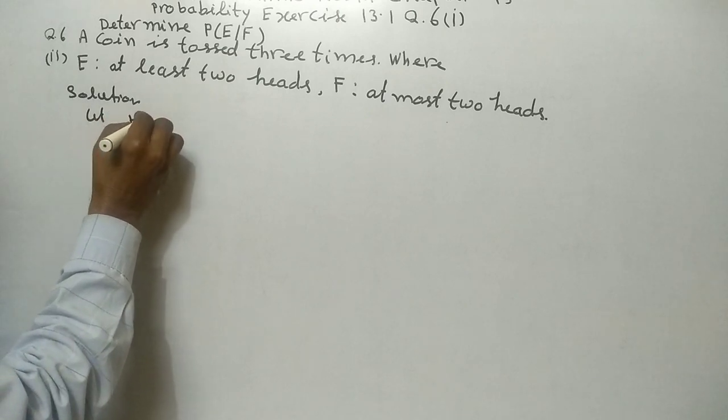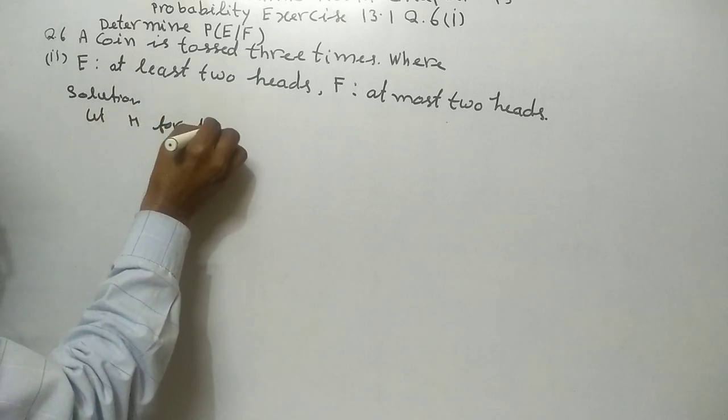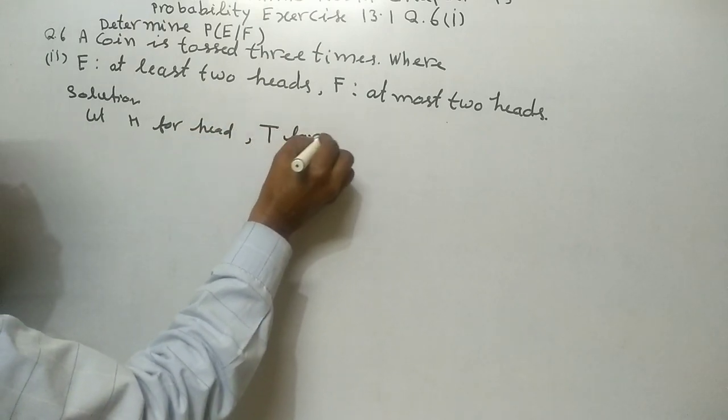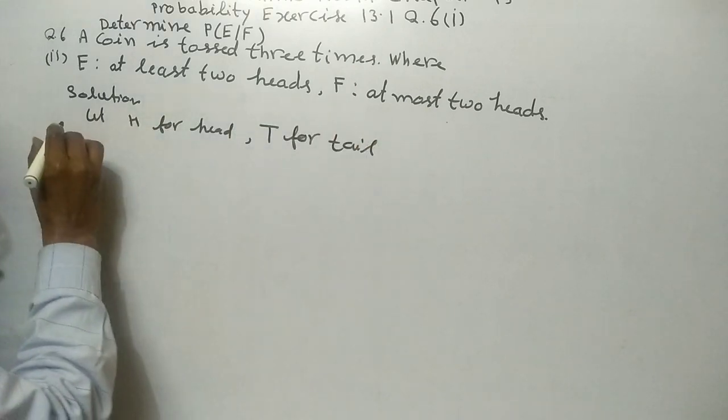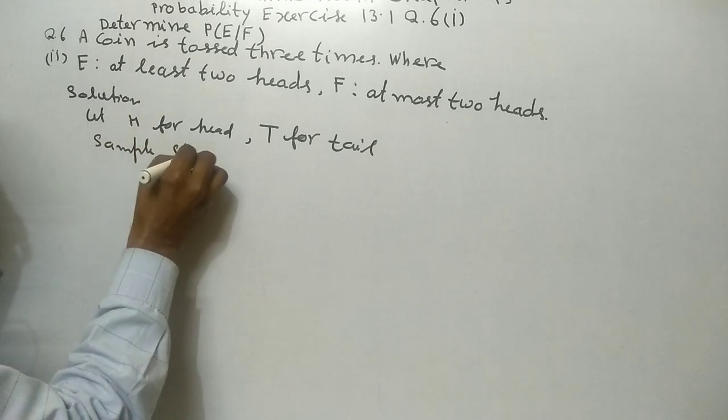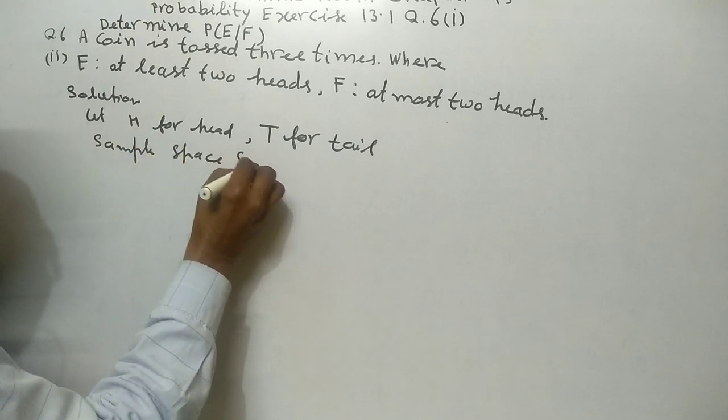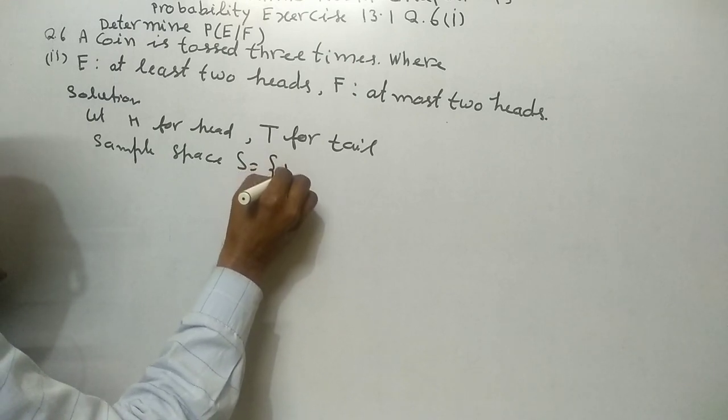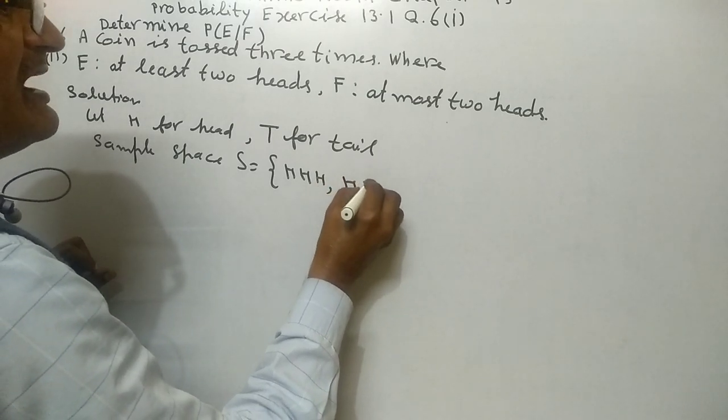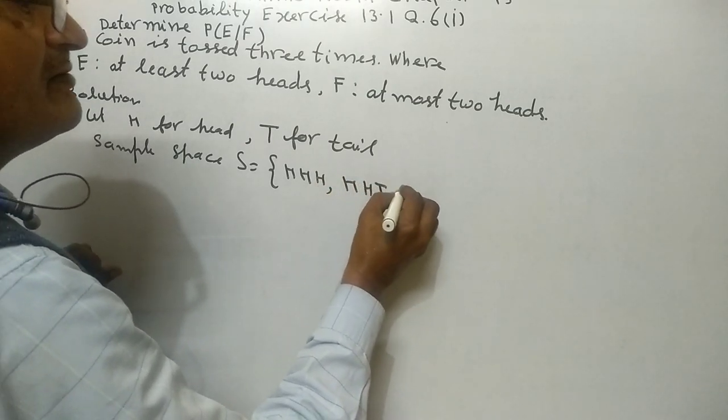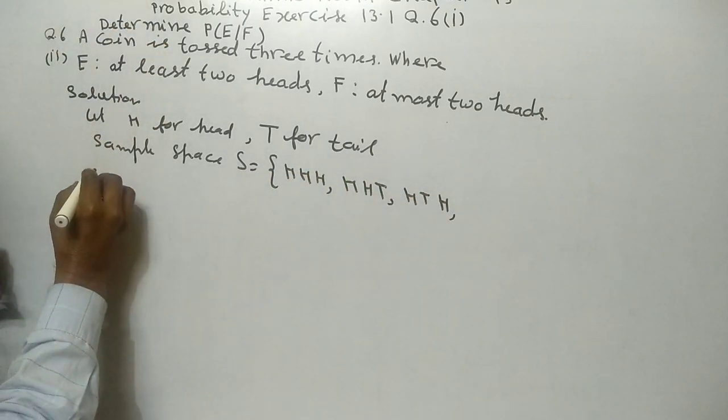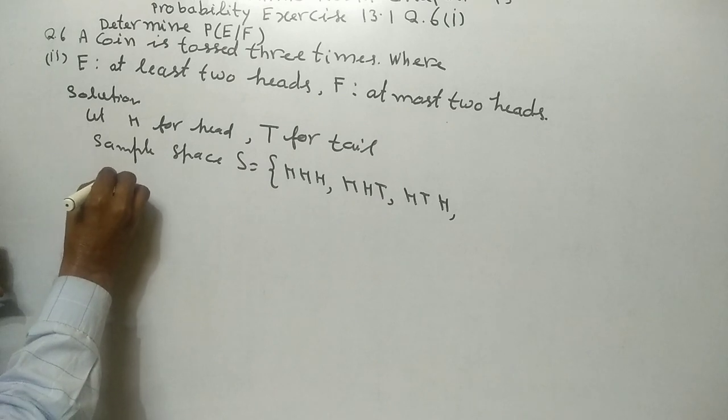Let H for head, T for tail. Sample space S equals: HHH, HHT, HTH, HTT.